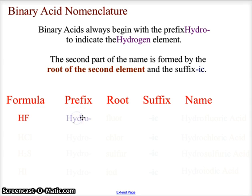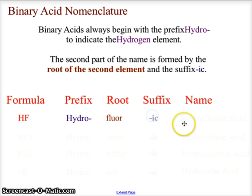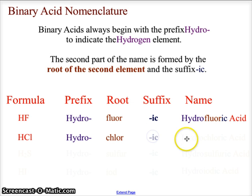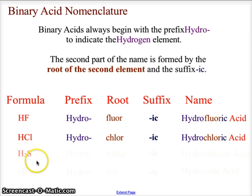Starting with HF: we use the prefix 'hydro' for hydrogen, add the root 'fluor' for fluorine, and end with the suffix '-ic', giving us hydrofluoric acid. For HCl: we take 'hydro' for hydrogen, 'chlor' for chlorine, and the suffix '-ic', giving us hydrochloric acid.